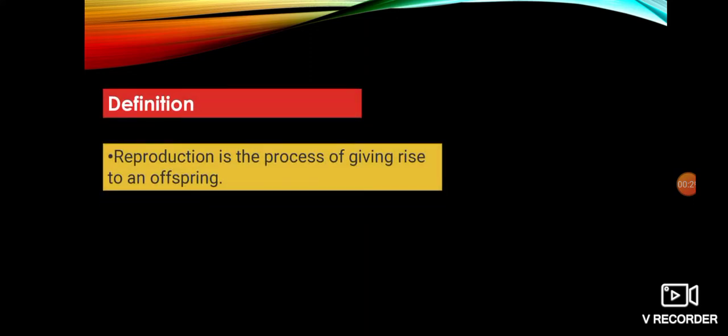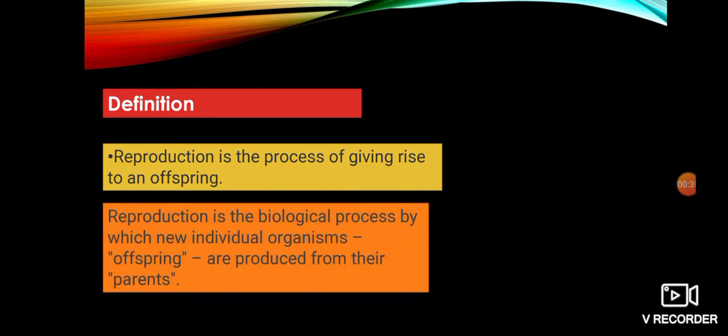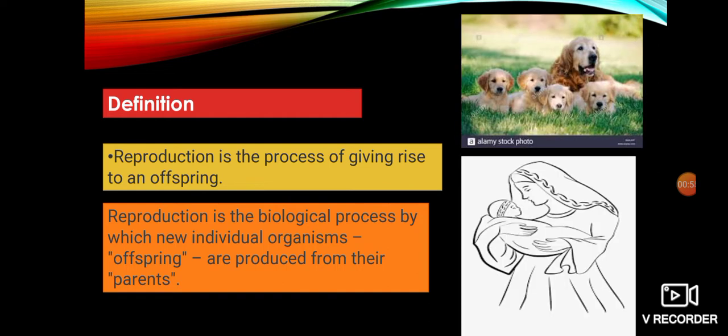We start with a small recalling of this chapter. First of all, we had learned about the definition of reproduction. The definition says that it is the process of giving rise to an offspring. In biological terms, reproduction is the biological process by which new individual organisms — called offspring, daughter, or young ones — are produced from their parents.